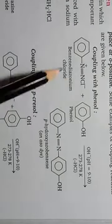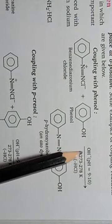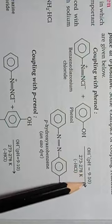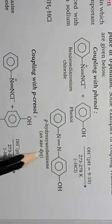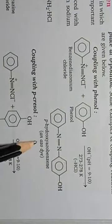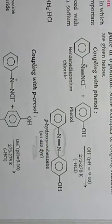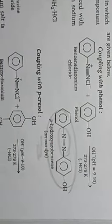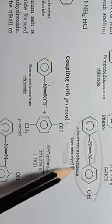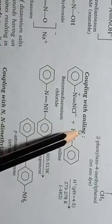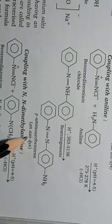For example, in the coupling reaction, when diazonium salt is treated with phenol in a basic medium (pH around 9 to 10) at 273 to 278 K, para-hydroxy azobenzene is formed, which is an azo dye. The compound is called an azo compound due to the presence of the azo bond (–N=N–). In the second example, when aniline reacts with diazonium chloride, para-amino azobenzene is formed, which is also an azo dye.